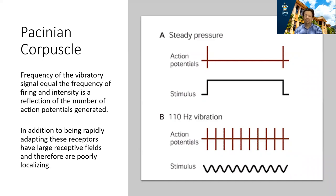Because Pacinian corpuscles are so large, they have very large receptive fields. The disadvantage of large receptive fields is poor spatial localization, meaning they are not able to pinpoint the exact spot on the skin.